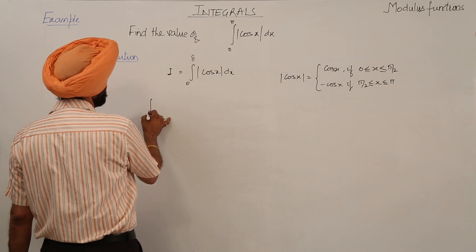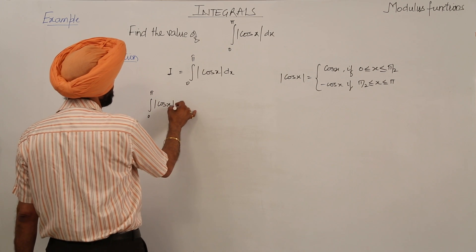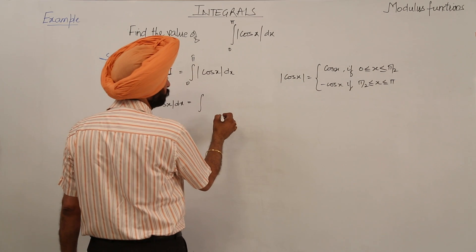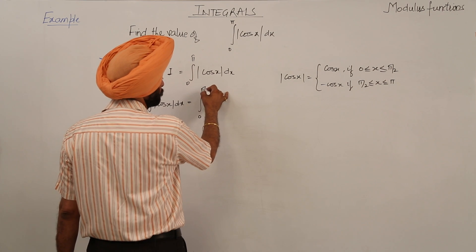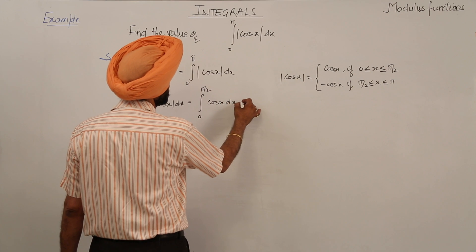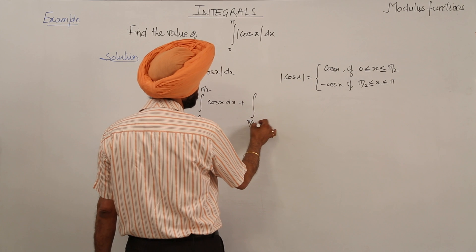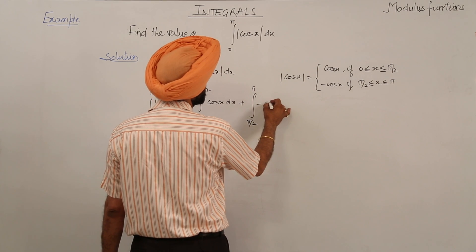So the question converts to the integral from 0 to pi of cosx dx, which is equal to the integral from 0 to pi by 2 of cosx dx plus the integral from pi by 2 to pi. In the second quadrant, it's minus cosx dx.